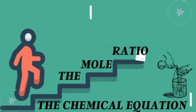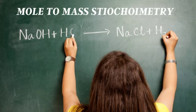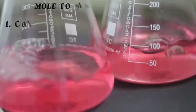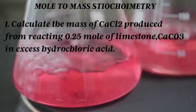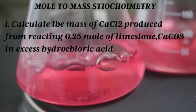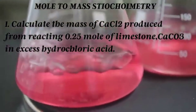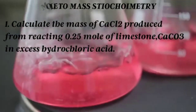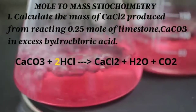Let's dive into a simple mole-to-mass stoichiometry problem. You will be given an equation and a mole ratio, and from the mole ratio you determine the amount of substance in moles that reacts to form a specific product. This value is then converted into mass using the formula: amount = mass / molar mass. The example asks us to calculate the mass of calcium chloride produced from reacting 0.25 moles of limestone with excess hydrochloric acid. Step one: write the balanced equation.